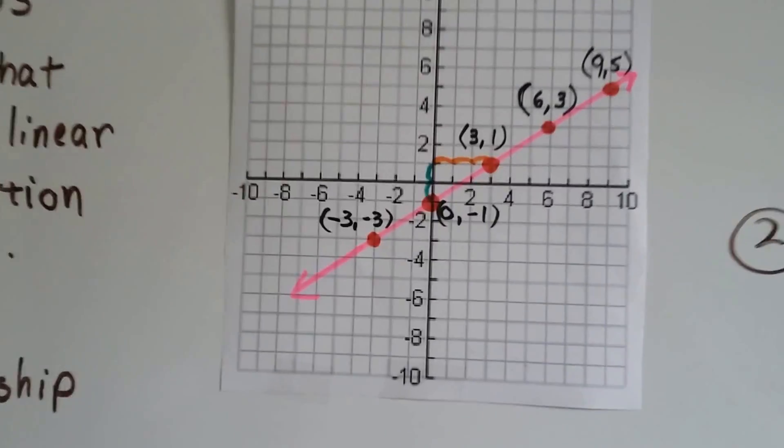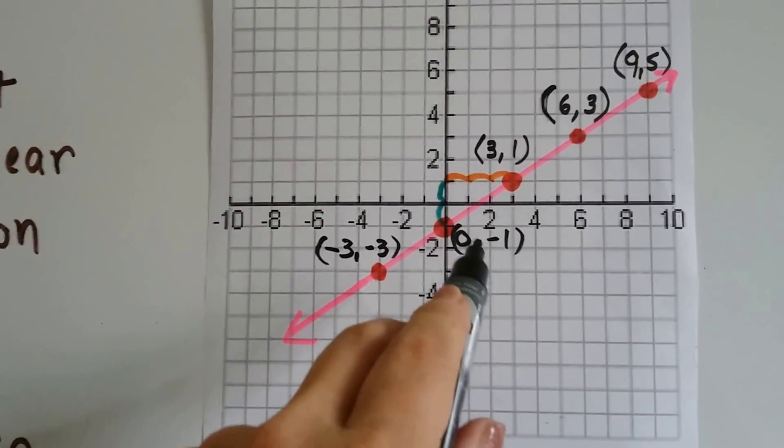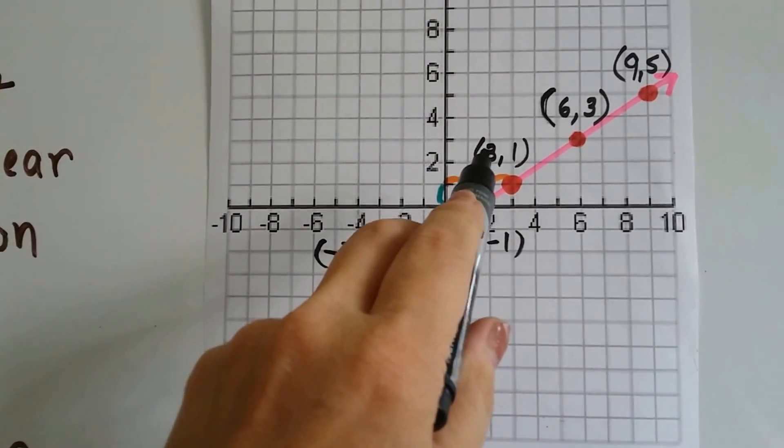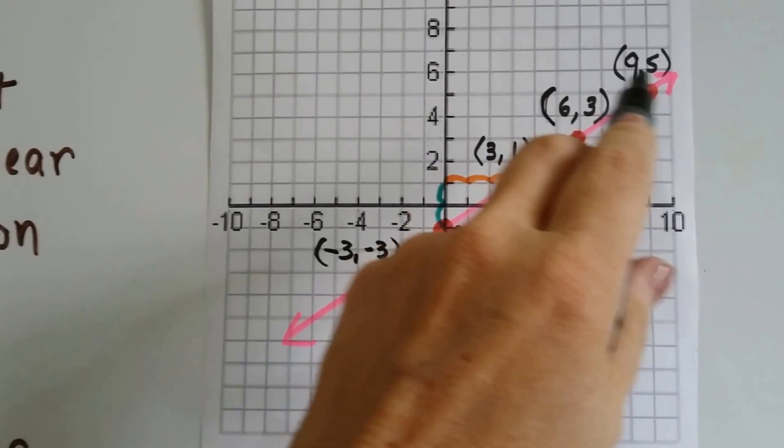So let's take a look at these points. We've got (-3, -3), we've got (0, -1), we've got (3, 1), (6, 3), and (9, 5).